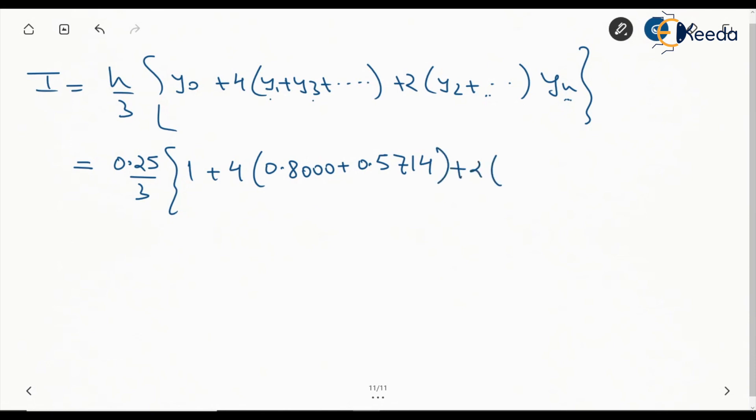Plus 2 times y₂. y₂ is the only term that is the even coefficient, so y₂ is 0.667. And the last term, which is y₄ for x equal to 1, which is 0.5.